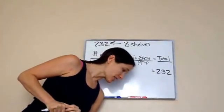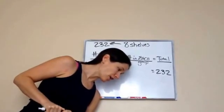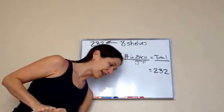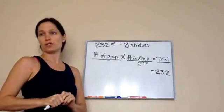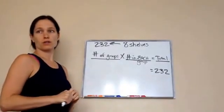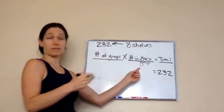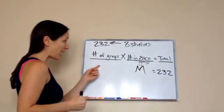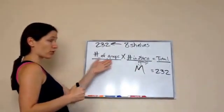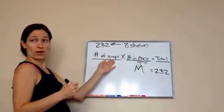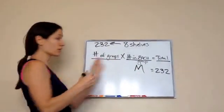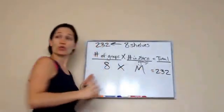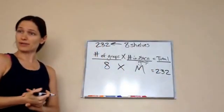If there are the same number of biographies on each shelf, how many biographies would be on each of the eight shelves? Each shelf — that's the one missing. So how many numbers of groups, or how many shelves? Eight. Eight times M equals 232. See how we did that?